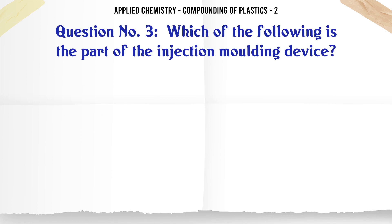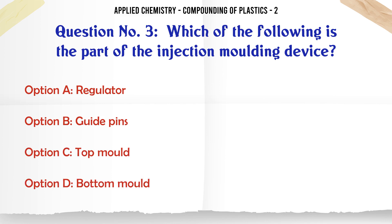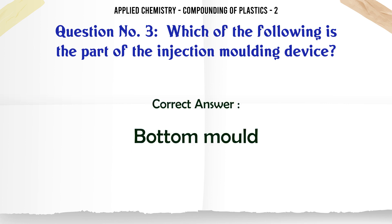part of the injection molding device? A. Air regulator, B. Guide pins, C. Top mold, D. Bottom mold. The correct answer is Bottom mold. Blowing otherwise